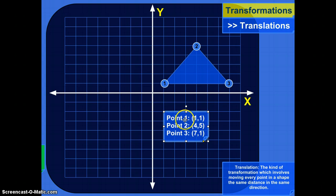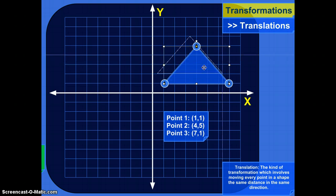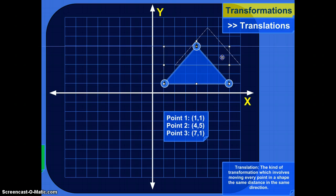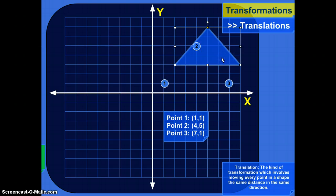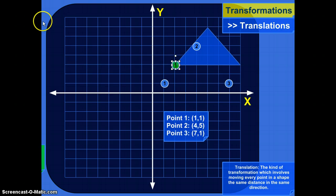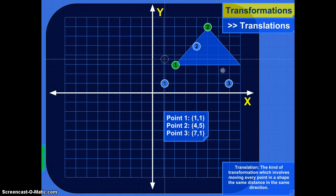Now let's translate this triangle. So where did point 1 go? It shifted up. Point 2 — boom — point 3. Let's look at the new locations here.